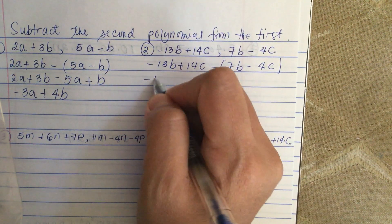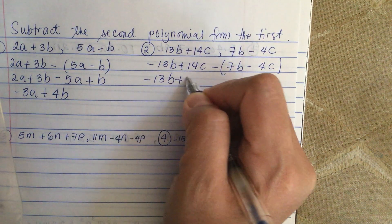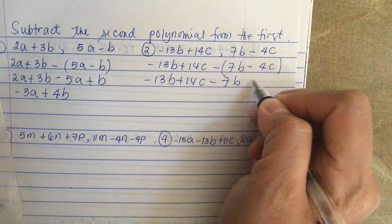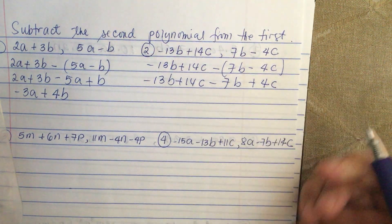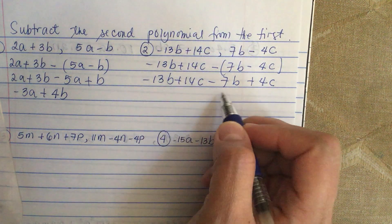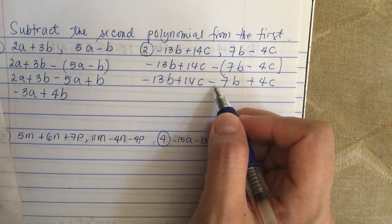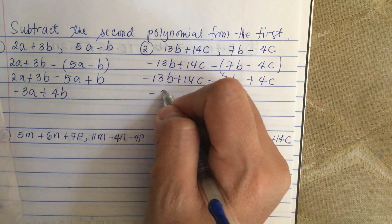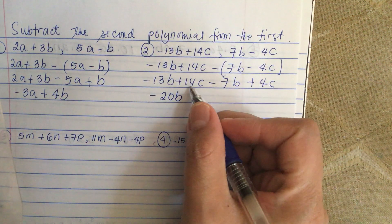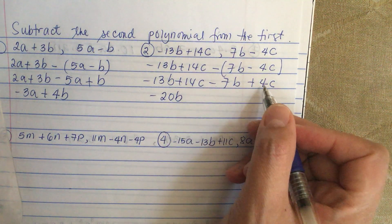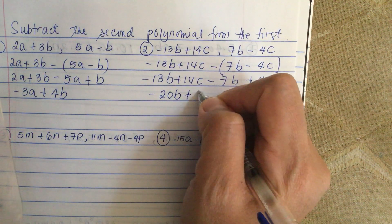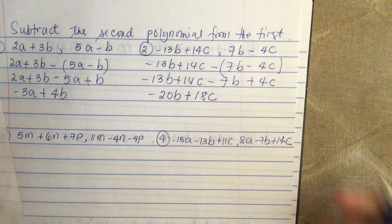So we have minus 13b plus 14c minus 7b plus 4c. We combine like terms: minus 13b minus 7b for a net of minus 20b. Then we have 14c plus 4c for a net of plus 18c.